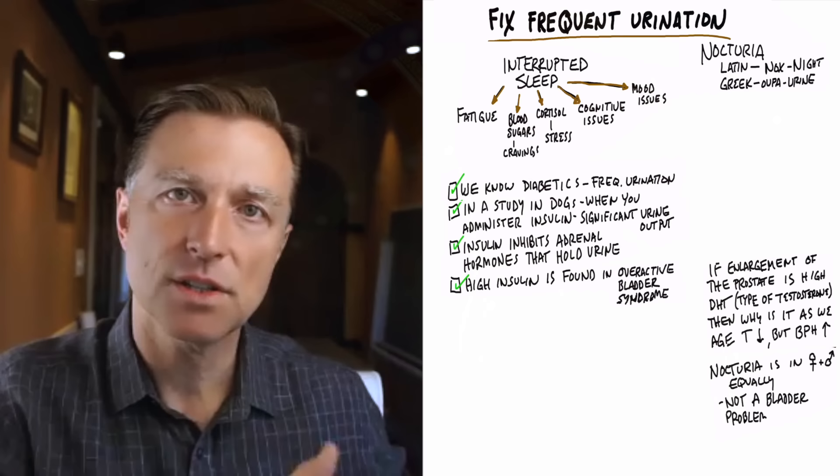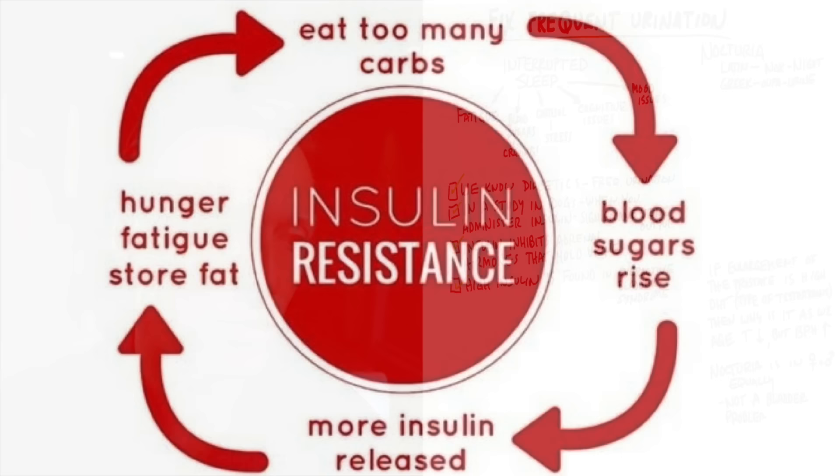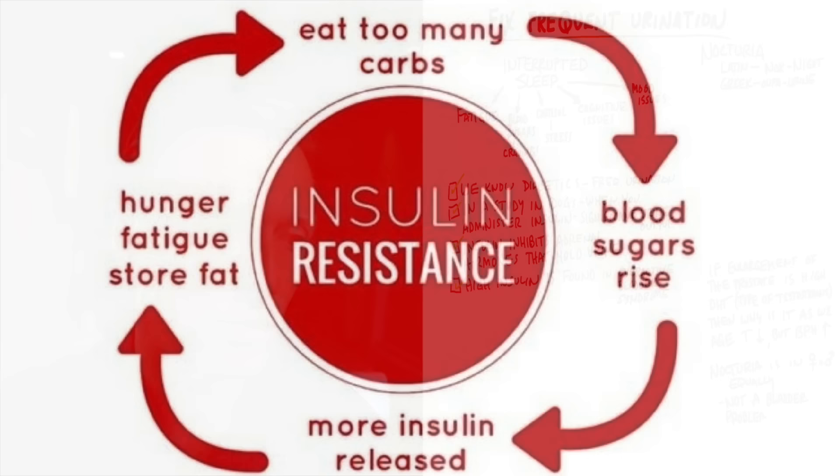High levels of insulin nearly always come before pre-diabetes. High levels of insulin are also associated with insulin resistance. And many people, both men and women who have urination frequency at night, also have metabolic syndrome.